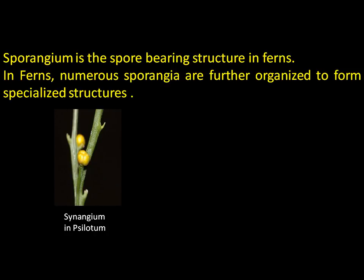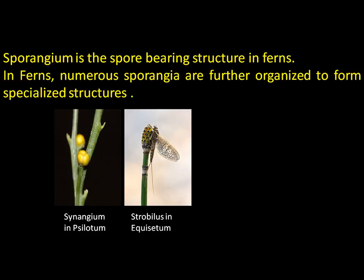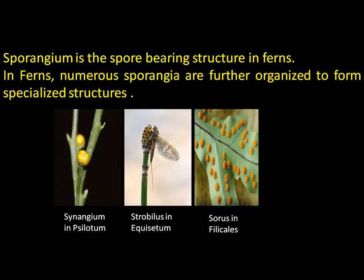In the case of Psilotum, there is a specialized structure called a synangium, which contains numerous sporangia inside with spores. In the case of Equisetum, the sporangia are organized into cones, whereas in higher ferns — higher pteridophytes like Pteris and Adiantum — the sporangia are clustered together to form specialized structures called sori.